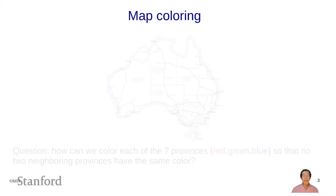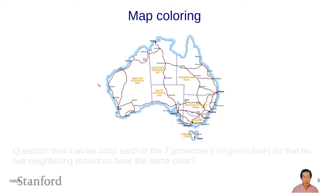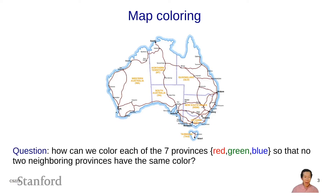Let's look at an example that can be solved via a constraint satisfaction problem: map coloring, a classic problem. Here is a map of Australia with seven provinces. Each province — Western Australia, Northern Territory, South Australia, and so on — has to be assigned a color. The question is how can we color each province either red, green, or blue so that no two neighboring provinces have the same color? We don't want Western Australia and Northern Territory to have the same color.